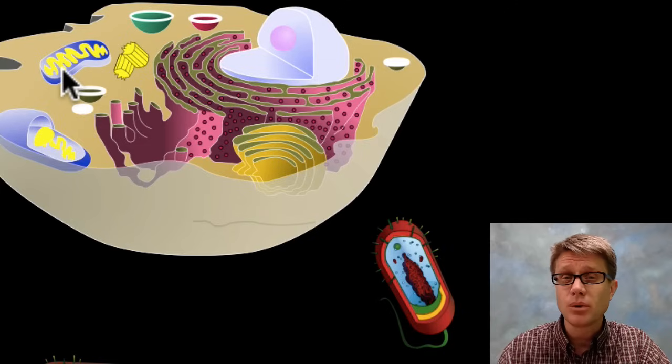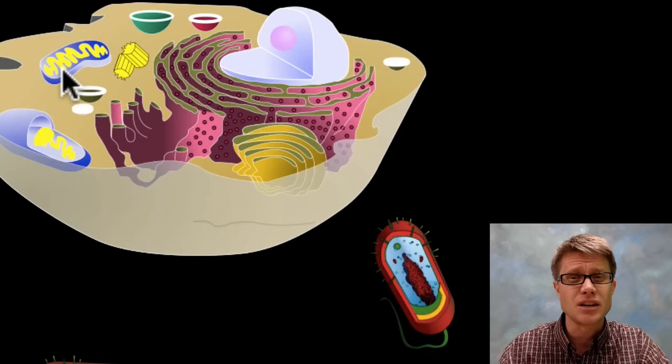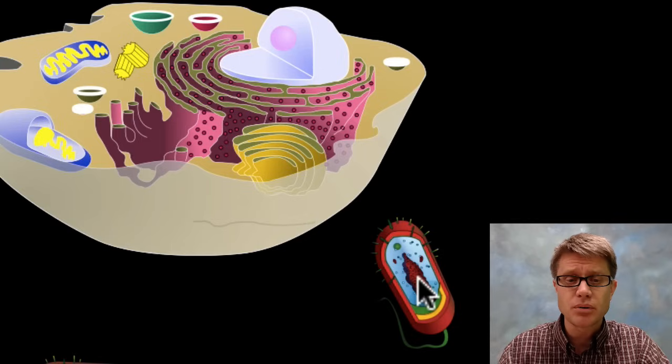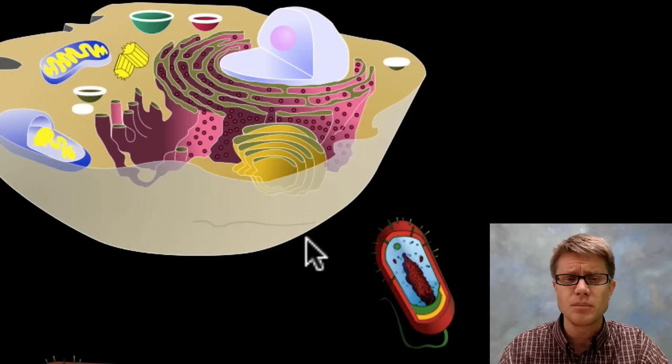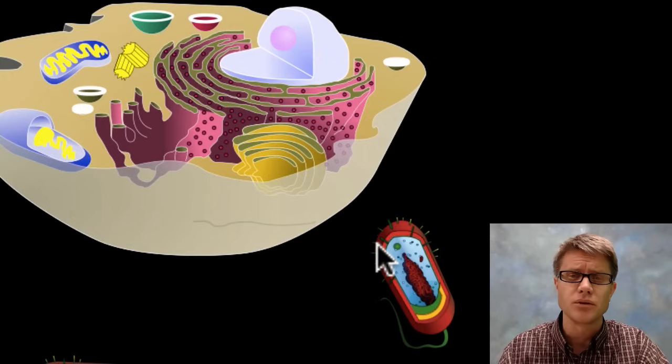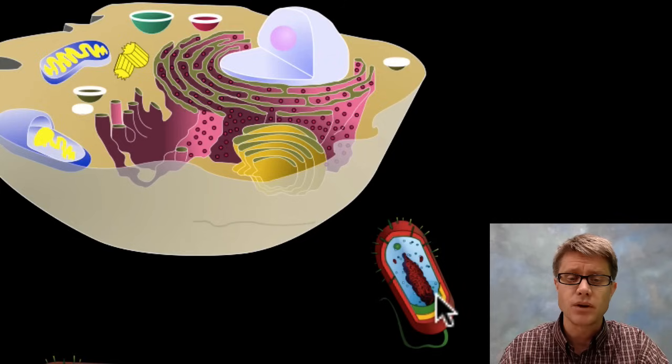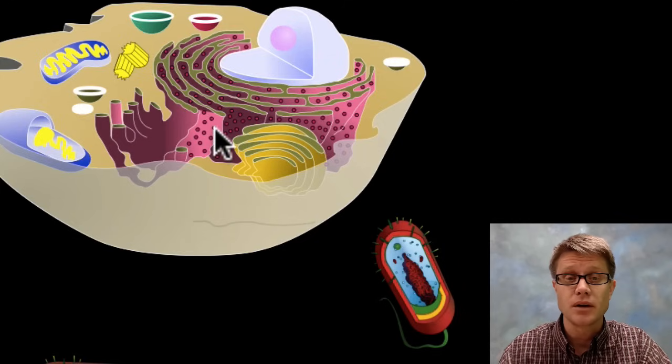But what we find is when we look in the fossil record, life started about 3.6 billion years ago and we just see prokaryotic cells for the longest of times. In other words we don't see eukaryotic cells show up until around 2 billion years ago. And it puzzled scientists how this shift was made because there are clearly two different evolutionary pathways.